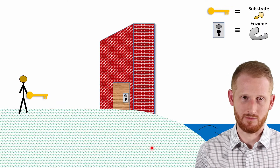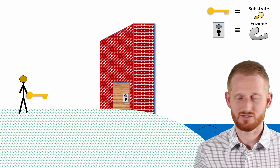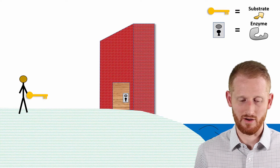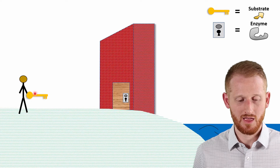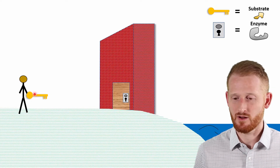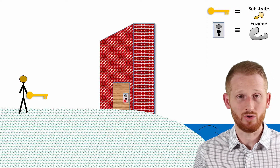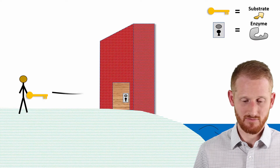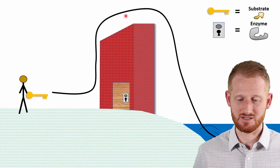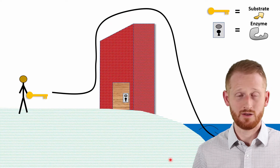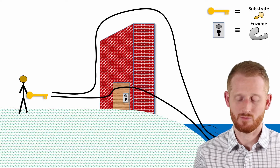Let's use a metaphor to help us here. We have this person who's trying to get down to the water — maybe fish or swim or do whatever this person's trying to do — and there's this wall in the way. In the wall is a door with a keyhole, and this person may or may not have the key. The key is the substrate, and the enzyme is the keyhole. If we do not have the key, the person has to go up and over the wall in order to get to the water, so a lot of energy is used. When we have the key, we can go right through the door, and a little bit of energy is used, but not nearly as much.